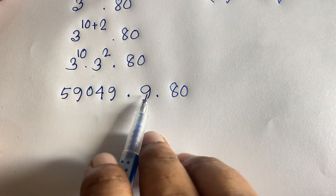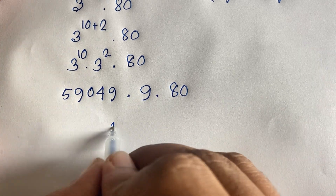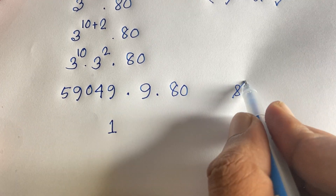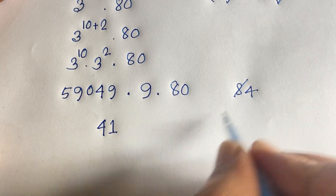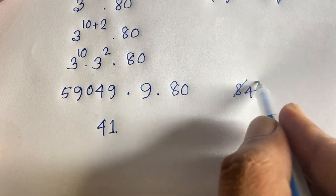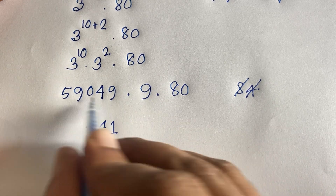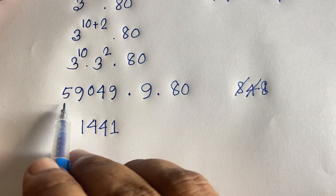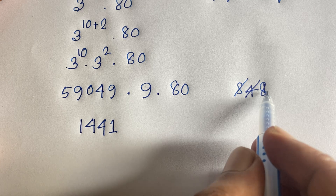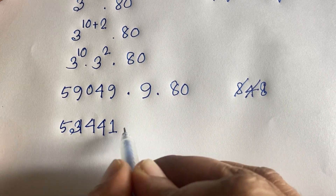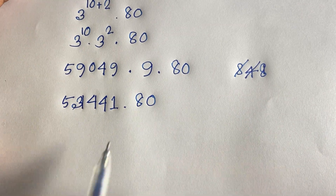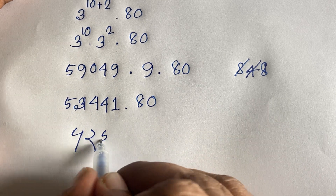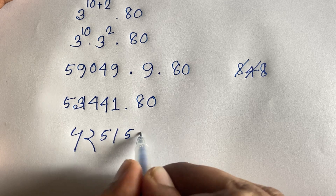Now computing 59049 times 9: 9 times 9 is 81, write 1 carry 8; 9 times 4 is 36 plus 8 is 44, write 4 carry 4; 9 times 0 is 0 plus 4 is 4; 9 times 9 is 81, write 1 carry 8; 9 times 5 is 45 plus 8 is 53. So 59049 times 9 equals 531441. Then multiplying by 80 gives 42,515,280.